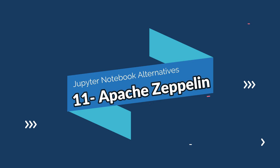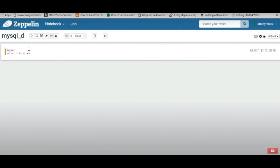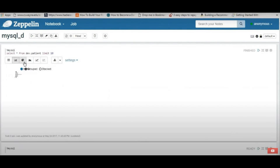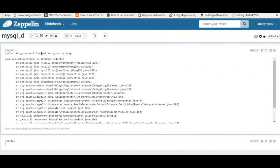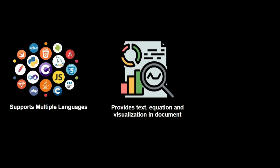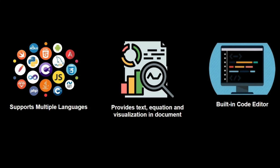On number eleven, we have Apache Zeppelin Notebooks. It is an open-source platform for data science and analytics similar to Jupyter Notebook. Some cool features of Apache Zeppelin are support for a wide variety of programming languages including Python, R, and Julia, the ability to include text, equations, and visualizations in a single document, a built-in code editor, and support for a wide range of libraries and frameworks.